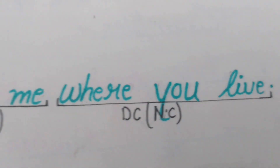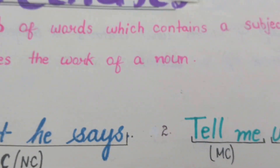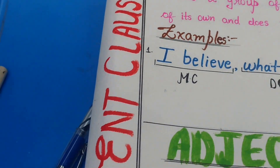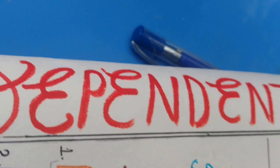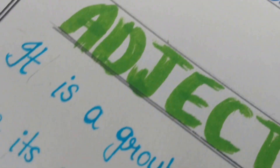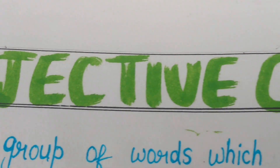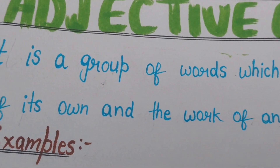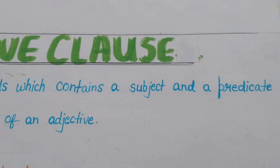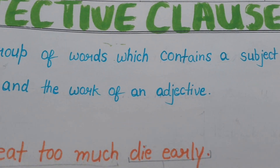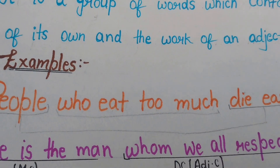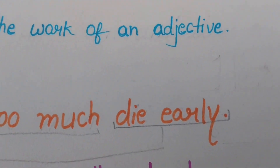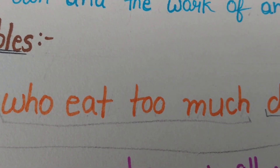Now, moving to another type of dependent clause — the adjective clause. An adjective clause is a group of words which contains a subject and a predicate of its own and does the work of an adjective. Example: 'People who eat too much die early.' Here, 'people die early' is the main clause and 'who eat too much' is the dependent adjective clause.